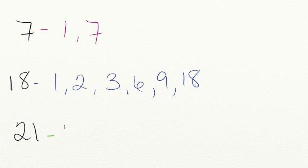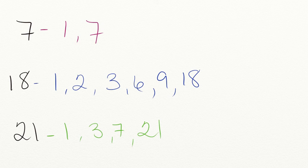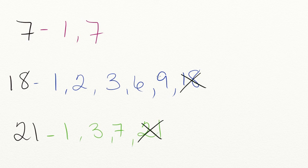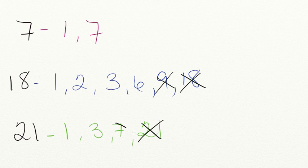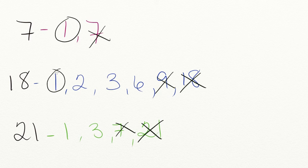For the number 21: we can multiply 1 times 21, and 3 times 7. Now that we have all of our factors listed, let's find the greatest common factor. They do not share 21, 18, or 9. While 7 and 21 both share a factor of 7, since 18 doesn't share that factor, it's not the greatest common factor of all three numbers. That means the greatest common factor for these three numbers is 1.